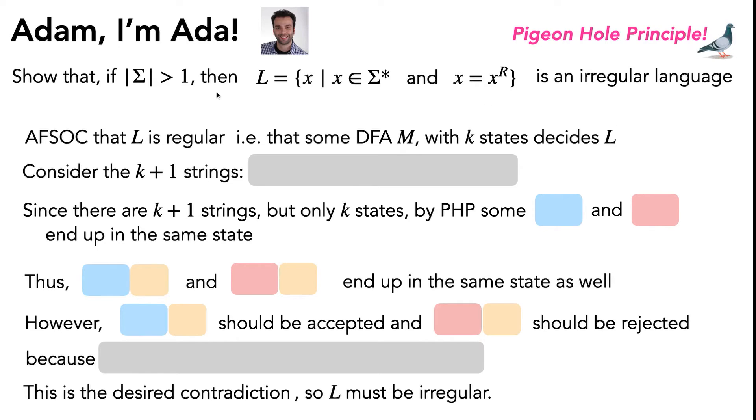Now let's solve this particular problem. So it's kind of hard to get started on picking what these k+1 strings are because we aren't given an explicit alphabet. But we do know that the alphabet contains at least two characters in it.